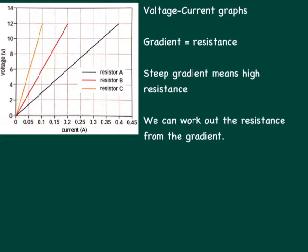And what we need to remember is that the gradient of the line, the steepness of the line is equal to the resistance. So a steep gradient has a very high resistance and a less steep gradient has a lower resistance. And we can work out the resistance of the actual component or the resistor or the bulb or whatever it is from the actual gradient of the graph and we're going to do a quick example of that.